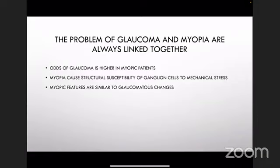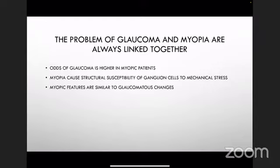As we all know, the odds of glaucoma are high in myopic eyes. Myopia causes elongation of the globe, causing structural susceptibility of the ganglion cells to mechanical stress. There are also myopic features which are similar to glaucomatous changes — this third point is very important, and we are going to talk about how we approach it.